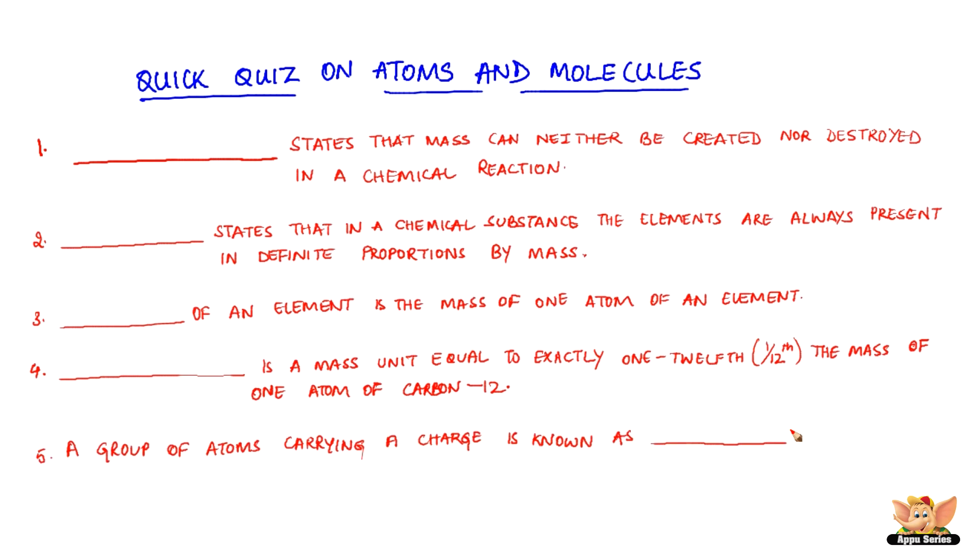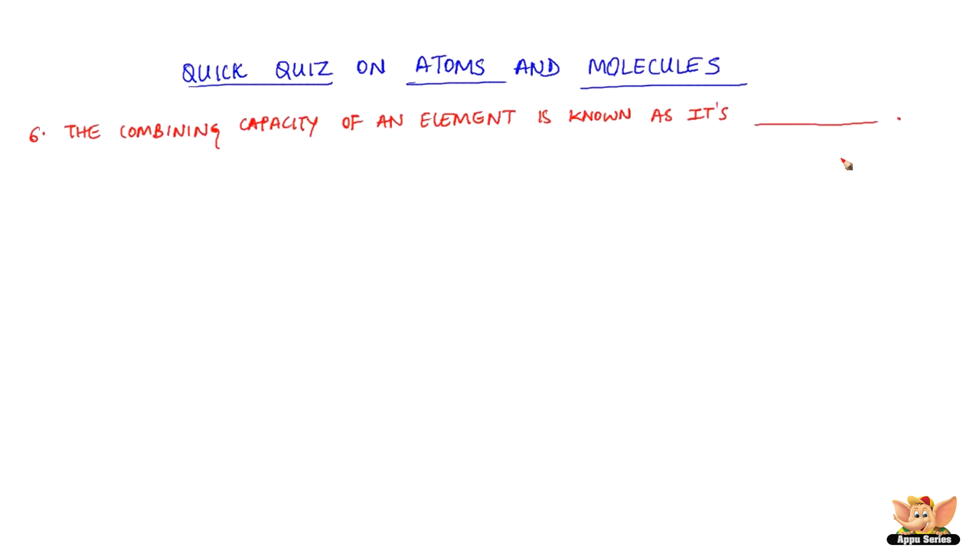A group of atoms carrying a charge is known as dash ion. The combining capacity of an element is known as its dash.